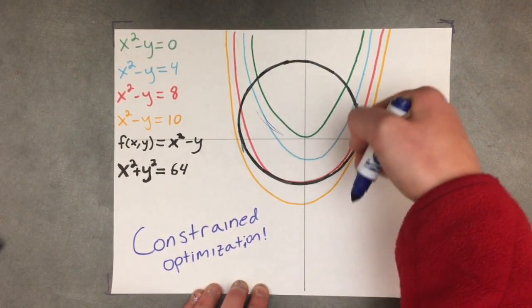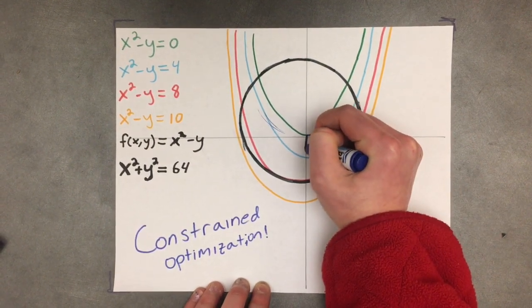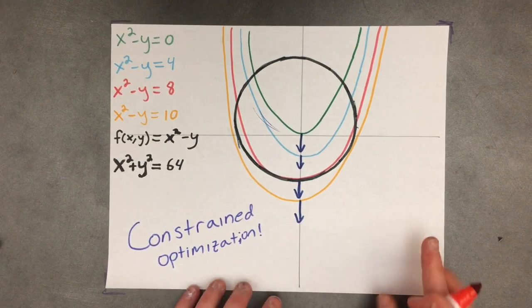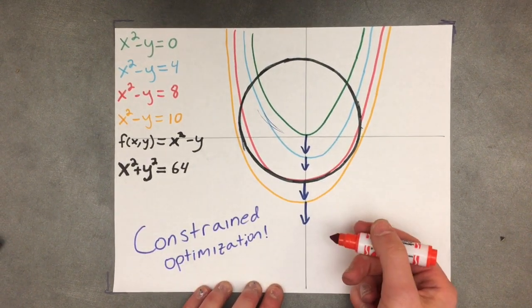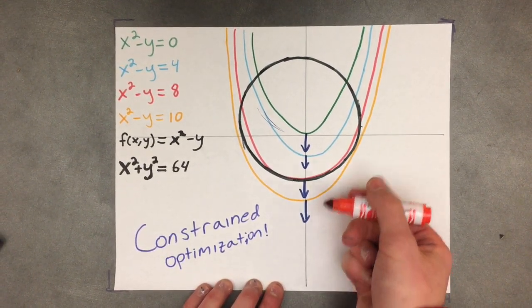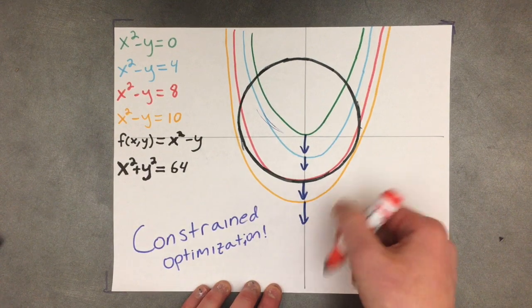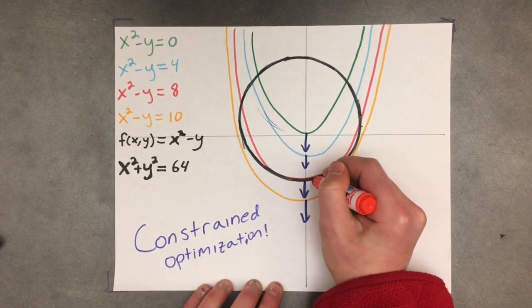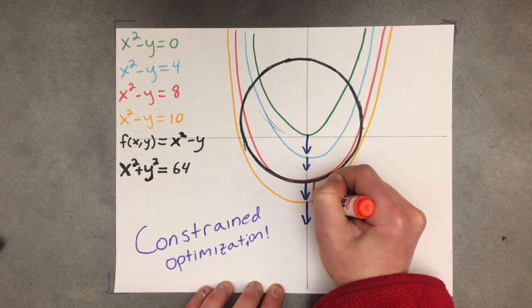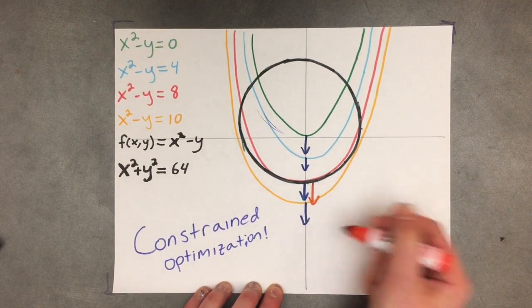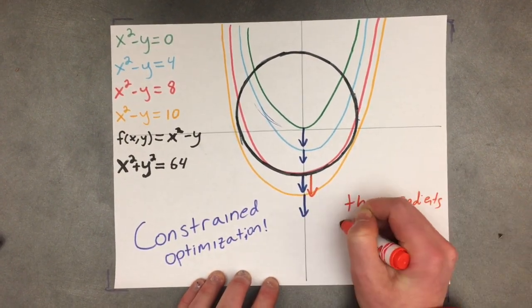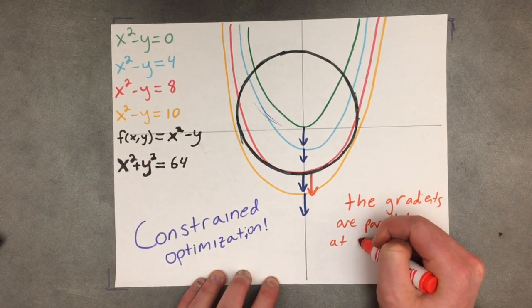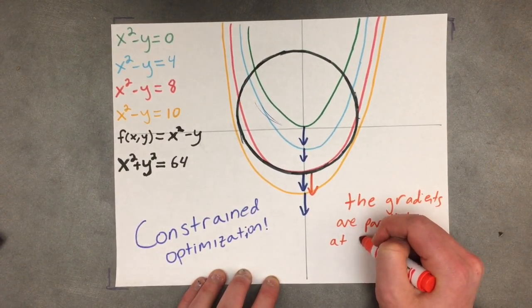The function increases downward so the gradient points downward. The function x squared plus y squared also increases downwards at this point, so the gradient also points downwards. This means the gradients are parallel. We can identify critical points by finding where the gradients are parallel.